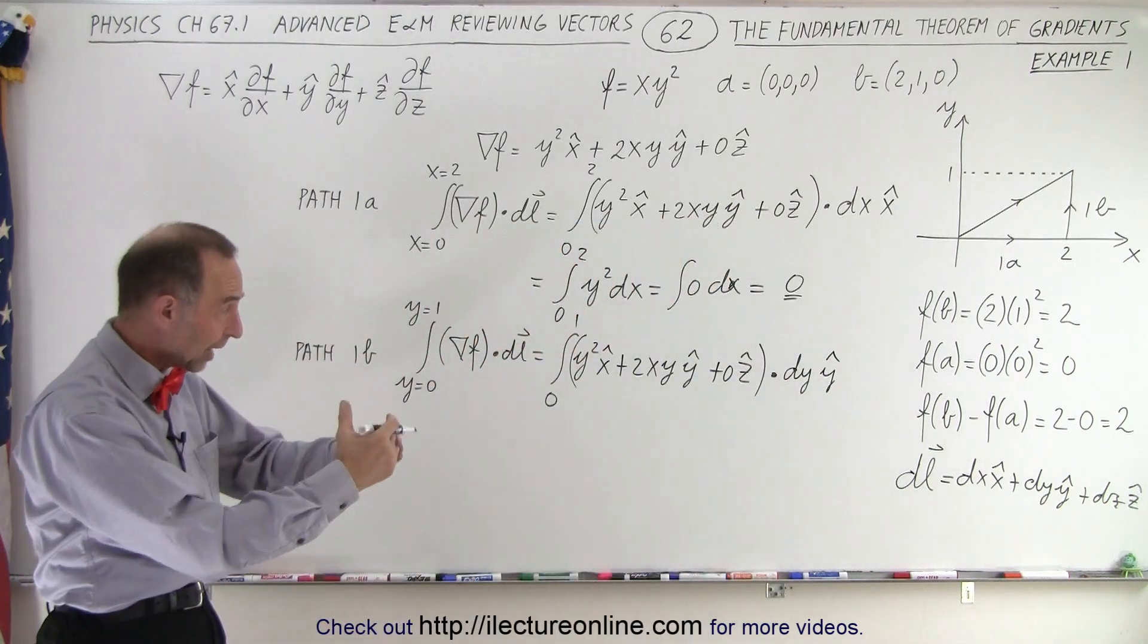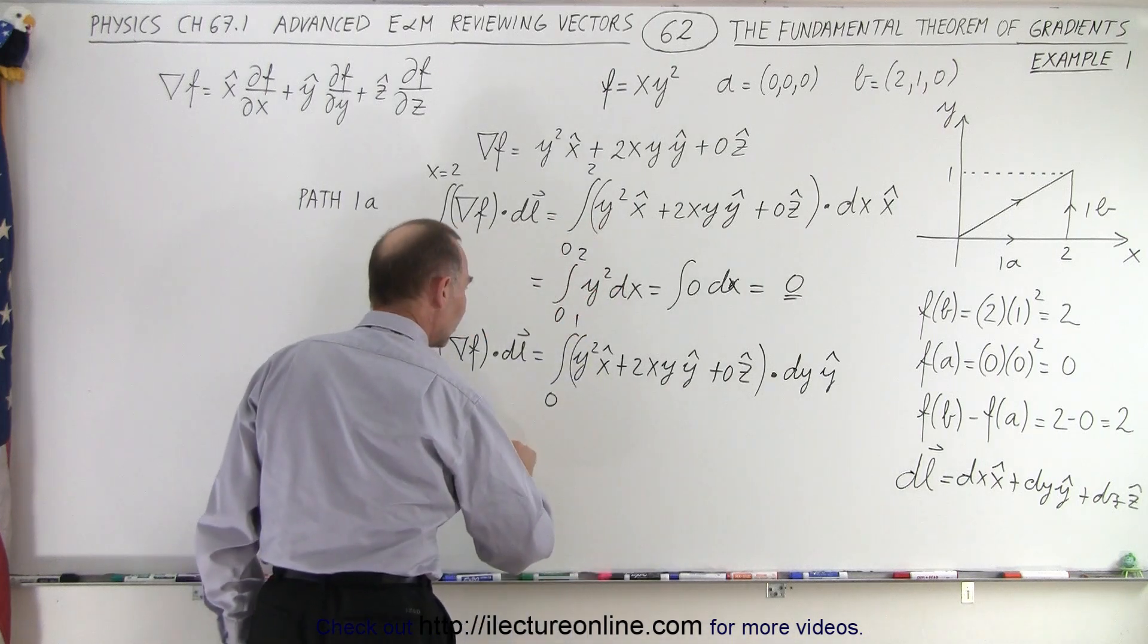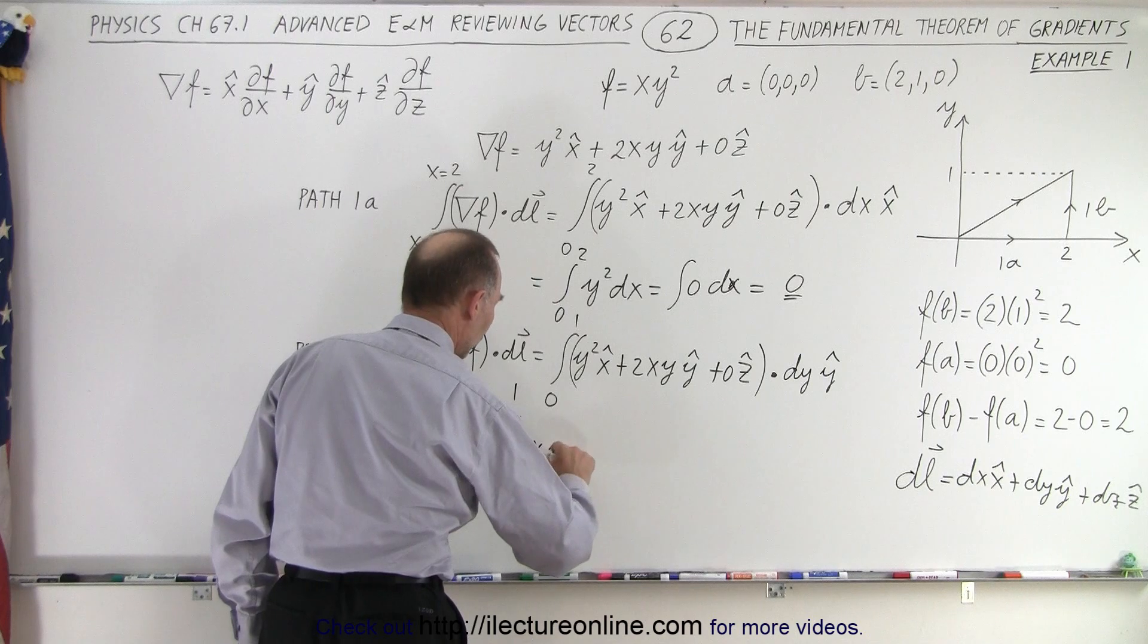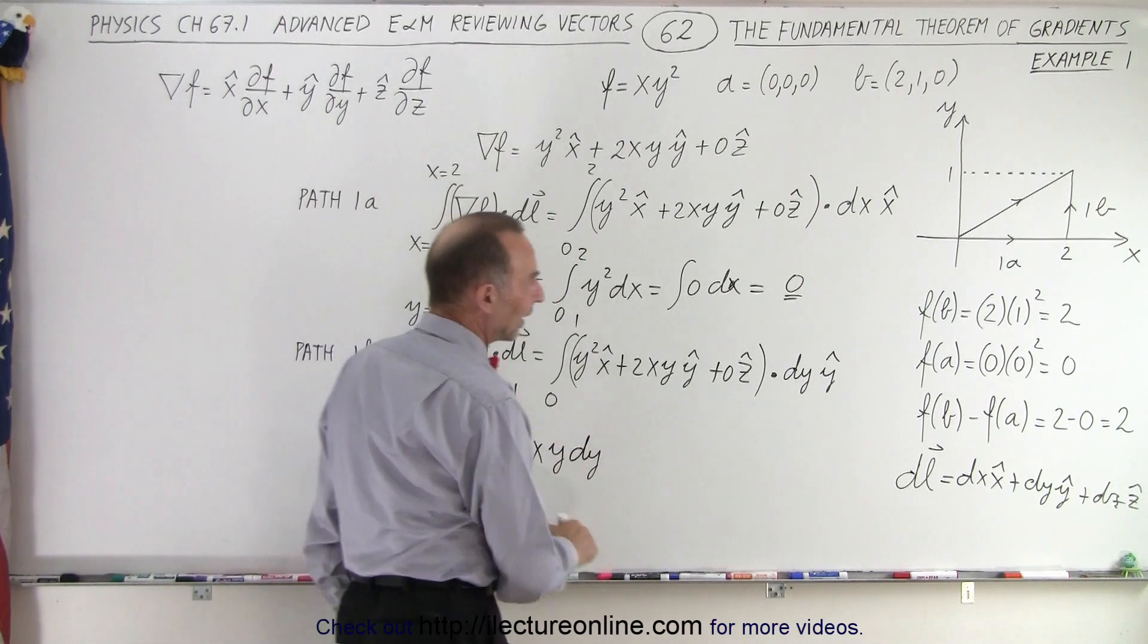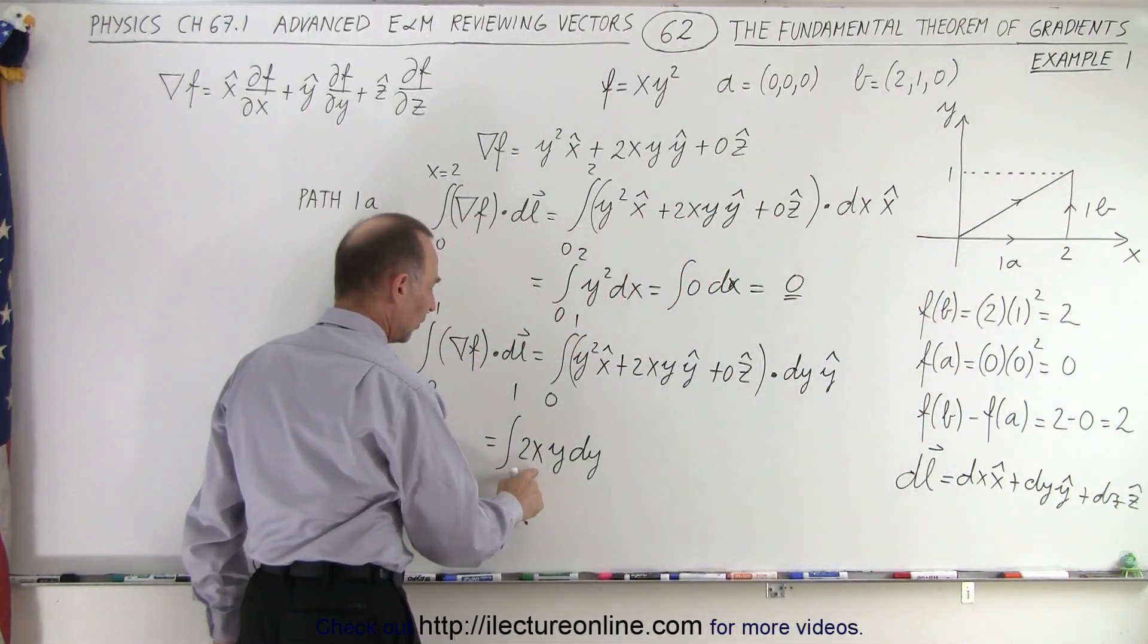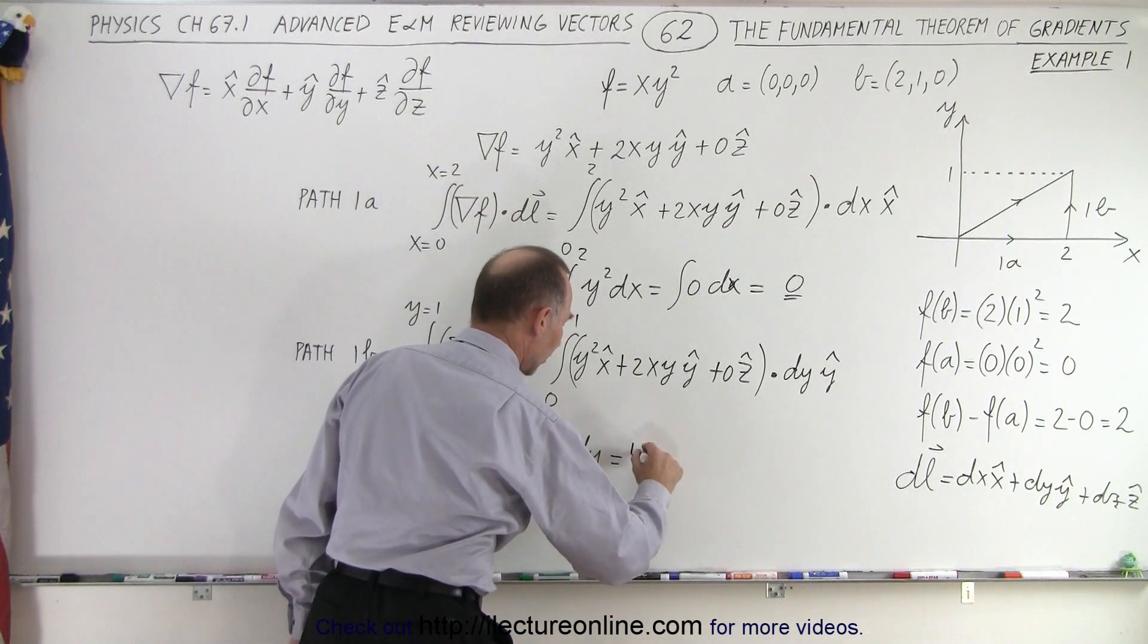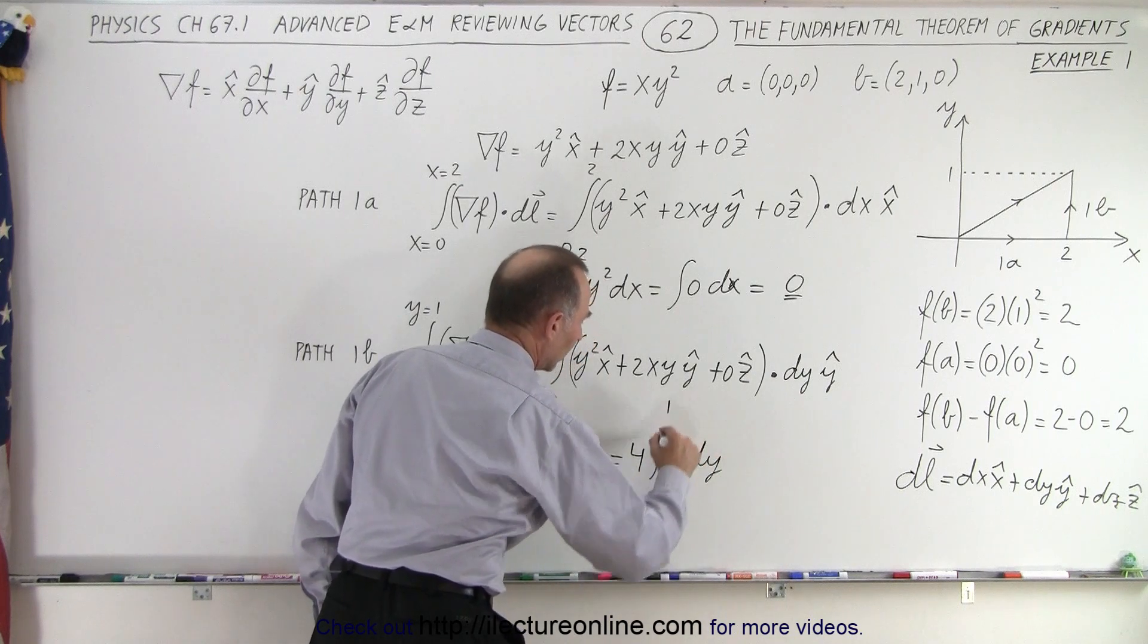So you can see when we take dot product, only the y component will survive. So this is equal to the integral from 0 to 1 of 2xy times dy. Now in this case, notice that x will be constant and x will be equal to 2 in path 1b. So therefore, we have 2 times 2, which is 4. We can take that outside integral sign. 4 times the integral of y dy from 0 to 1.